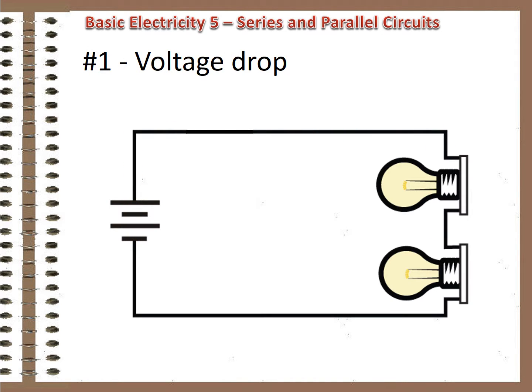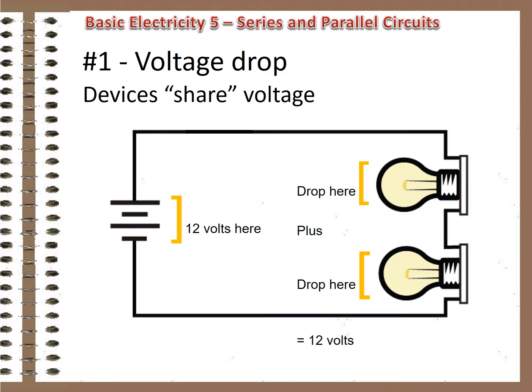In a series circuit, each device shares the energy of the source. If the source has, say, 12 volts of potential energy, that 12 volts is divvied up between all the devices in the circuit. Technically, we say the voltage drops across all the devices add up to the voltage of the source.